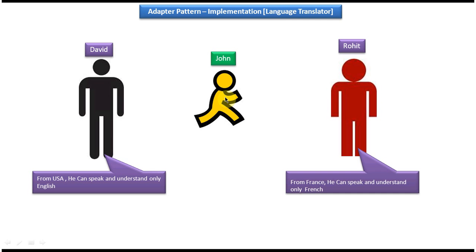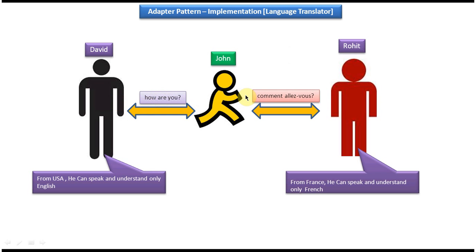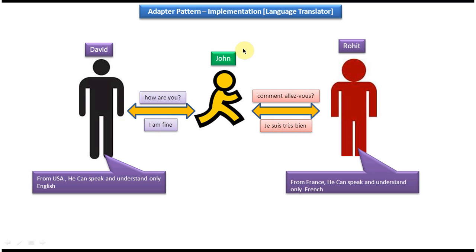Suppose David wants to ask 'How are you?' to Rohit. David first tells John 'How are you?' Then John converts 'How are you?' to French and tells Rohit. Then Rohit receives this in French and replies 'I am fine' in French. Then John translates 'I am fine' from French to English, and tells David 'I am fine.' So in this way both David and Rohit can communicate with each other. John is acting as an adapter.